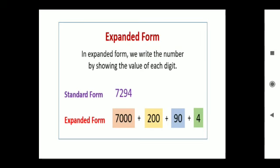Expanded form: we write the number by showing the value of each digit. For example, standard form 7294. If we write the expanded form, first we write 7000, then 200, then 90, plus 4.